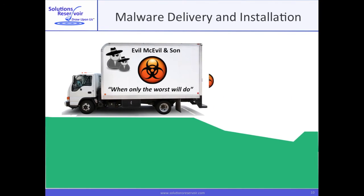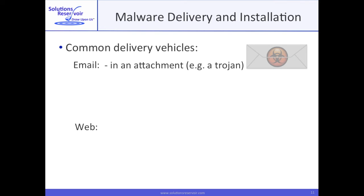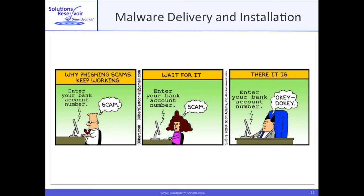So how is malware delivered? Sometimes it's almost the digital equivalent of this. Common delivery vehicles for malware are email and the web. Malware is often hidden within an email attachment, as are inducements to click an unsafe link. Scattershot inducements are called spam, while a phishing scheme has some focus and spear phishing is extremely focused. For example, if this had been an offer to date native HTML speakers, would Dilbert and Alice really have dismissed it so quickly?